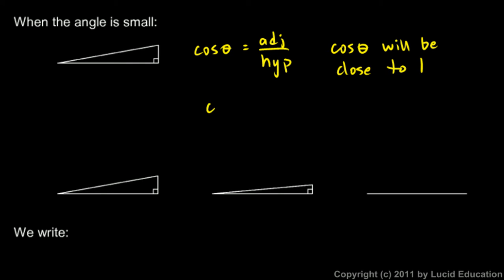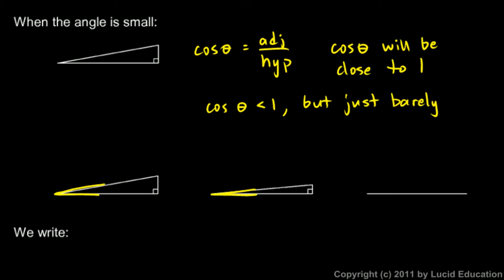The cosine of theta will still be less than 1, but just barely so. Now imagine this angle getting smaller and smaller, and eventually down to the degenerate case where we have not a triangle anymore but just a line segment. You can see in this picture that the adjacent side and the hypotenuse are almost exactly the same.